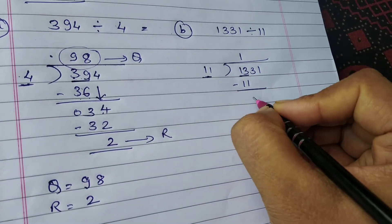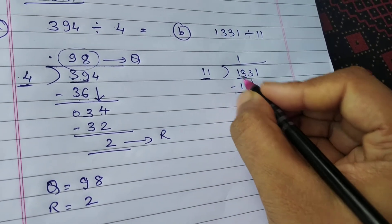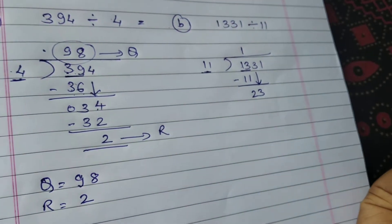So 3 minus 1, 2. Now take the next digit down. 1 minus 1 toh 0 hota hai. Toh ab nahin bhi likho ke toh bhi chalega because aapko aage hai samajh mein.